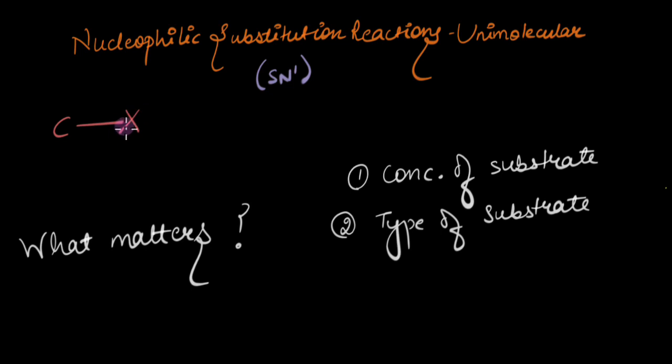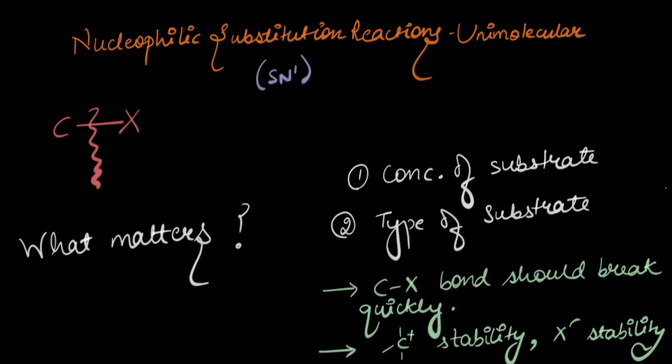Its concentration and also the strength of this C-X bond. Because for the rate to be higher, I want this bond to break quickly. And therefore, the carbocation stability and the X minus stability also matter to me. Because if they are stable individually, the bond will break quickly and the rate will be higher.